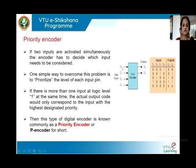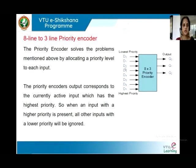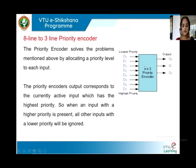For example, if D0 and D1 become active simultaneously, D1 will be given the highest priority compared to D0. Now let us see how this works in an 8-line to 3-line priority encoder. In the 8-to-3 priority encoder, we have 8 inputs D0 to D7 and 3 outputs Q0, Q1, and Q2.